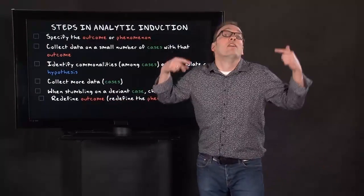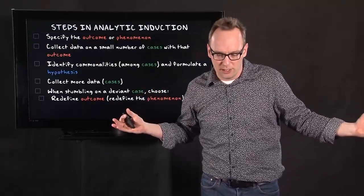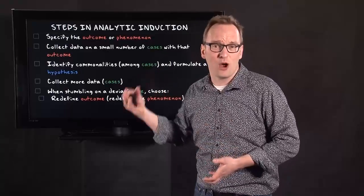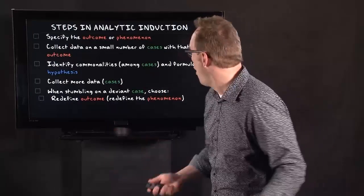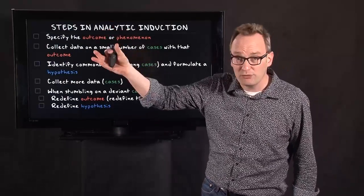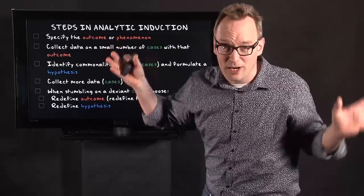In order to do either one of these two things. First, you can redefine the outcome or the phenomenon. Wait a second, this case is deviant. Does it mean that we have to redefine what is going on? Probably, yes. Or you have to redefine your hypothesis. So either your dependent variable or your explanation.